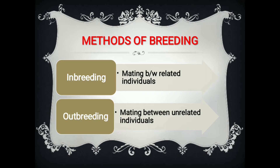Now, the methods of breeding. There are generally two methods of breeding. One is called inbreeding and the other one is outbreeding. Inbreeding refers to the mating between related individuals, while outbreeding refers to mating between unrelated individuals.